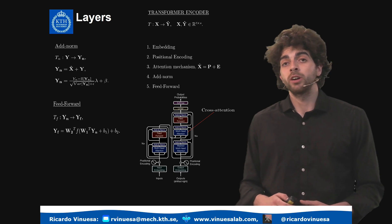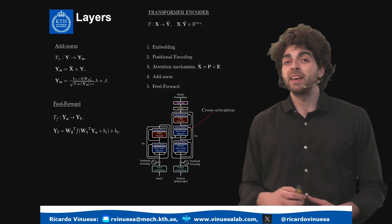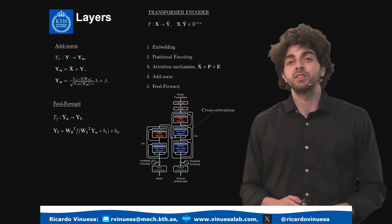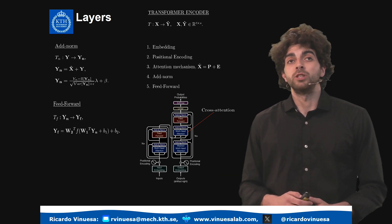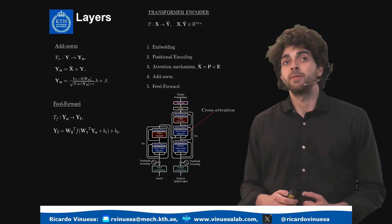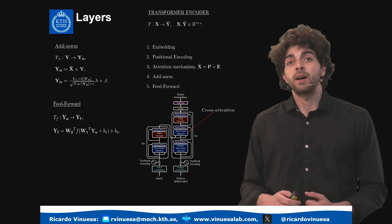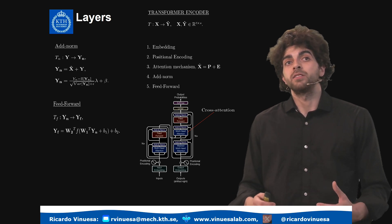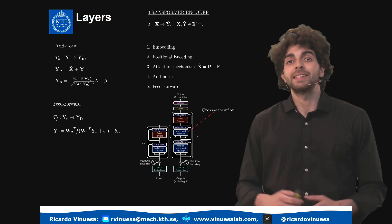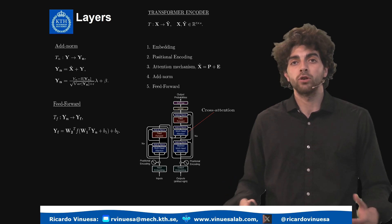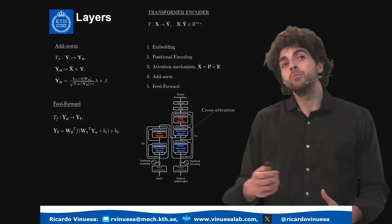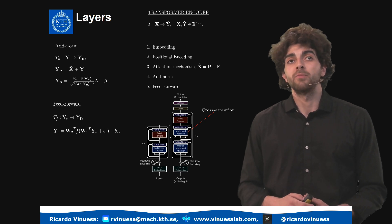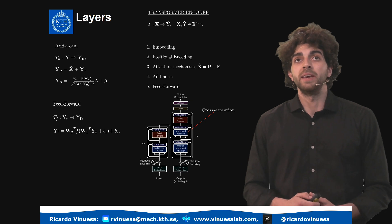Lastly, the feed-forward layer is a canonical layer used in many kinds of deep learning algorithms. It is formed by two matrix multiplications with an activation function in between. First we multiply our input by the W1 matrix and add a bias vector, then we activate this matrix through a tanh, sigmoid, or ReLU — any kind of non-linear function that is able to reproduce non-linear behaviors of our data. Finally, we multiply by a learnable matrix W2 and add the bias vector b2.